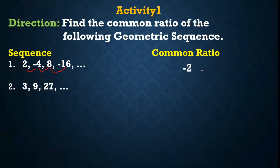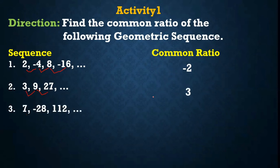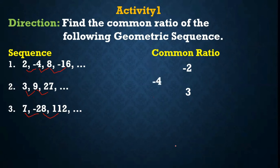For the second sequence, we have 3, 9, 27. To find the common ratio, we divide 27 by its previous term which is 9: 27 divided by 9 is 3. And 9 divided by 3 is 3. Ibig sabihin, 3 yung common ratio. For example number 3, we have 7, negative 28, and 112. Divide lang: 112 divided by negative 28 equals negative 4. And negative 28 divided by 7 is also negative 4. Therefore, the common ratio is negative 4.